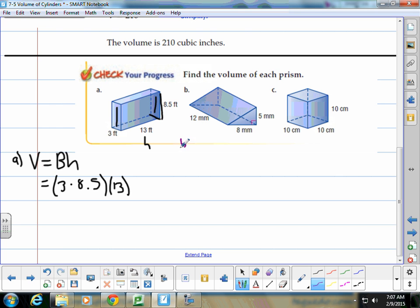For B, we're still using the volume is the base area times the height. Our base is this triangle here. So we're going to use our triangular area. So that's ½, base of 8, height of 5, times the total height of this prism of 12. You work that out. Make sure you do the units correctly.